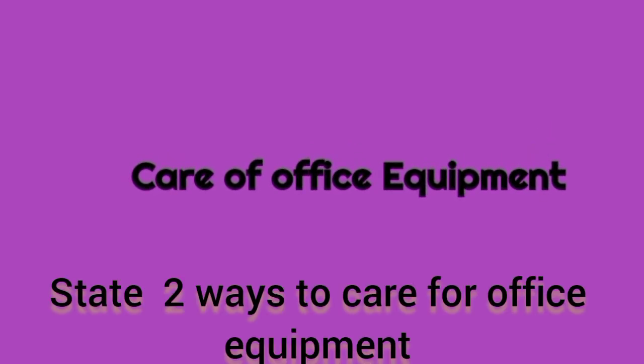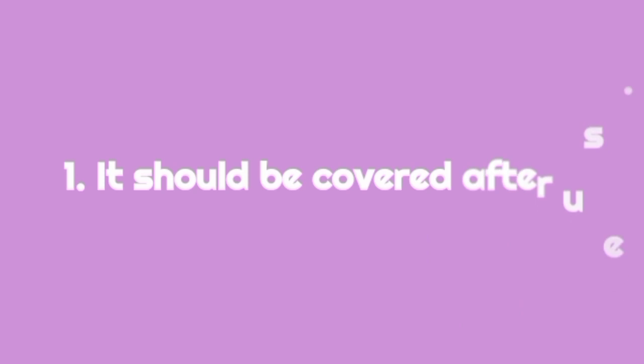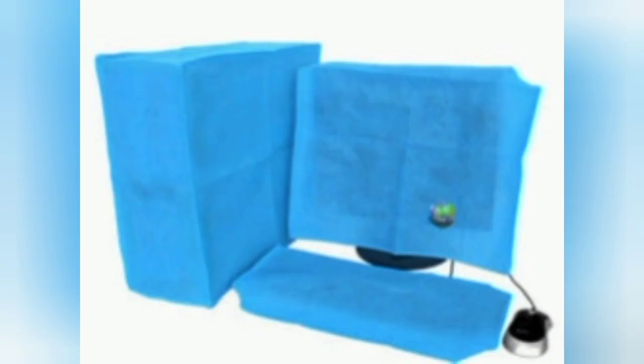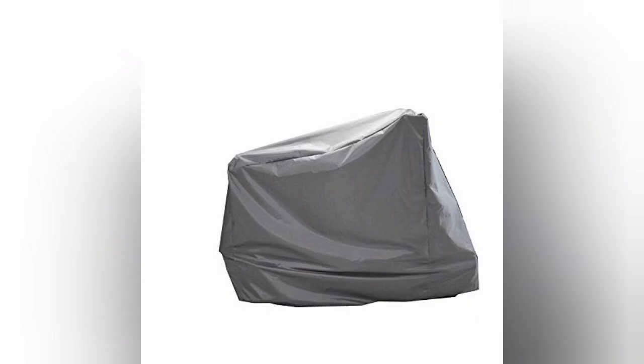So how do we care for this office equipment? For every office equipment to last as long as we want, we have to care for it. The first thing we do is cover the office equipment immediately after use. We cover them to keep them safe from insects, from dust, and even from rats.